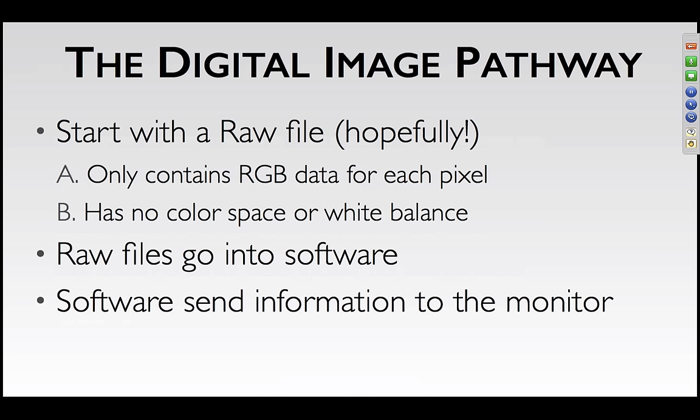Let's talk about what happens with your images. You're starting with a raw file, hopefully. JPEGs are very limited — if you're shooting JPEGs you have to be really careful. A perfectly exposed JPEG is a wonderful file, but if they're slightly off, you have much less latitude for editing. Remember that when dealing with a raw file, the only information in that file is three numbers — red, green, and blue — for each pixel. There's no color space assigned, no white balance assigned. When you bring those images into software, it will use whatever your camera was set for as a starting point, but none of this has been decided yet. The software then has to render that image up to the screen, all done through a series of profiles, and you have to make sure this is set up correctly.